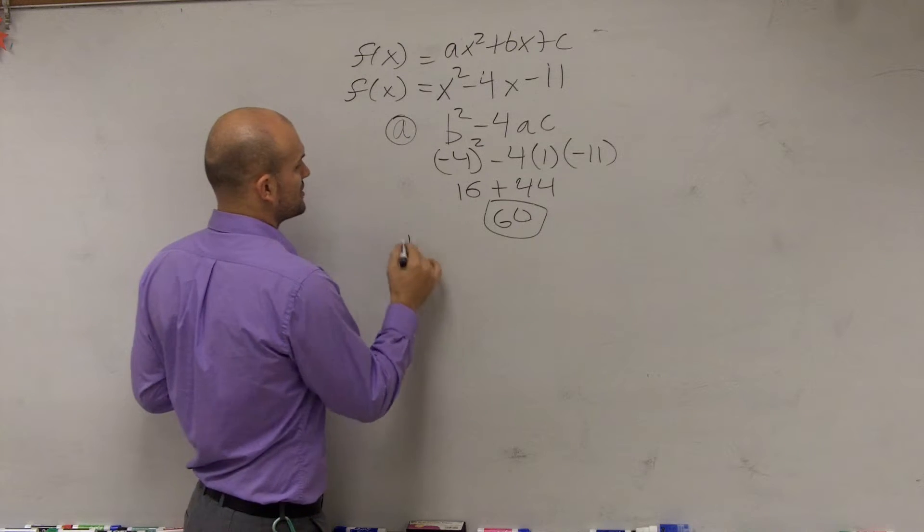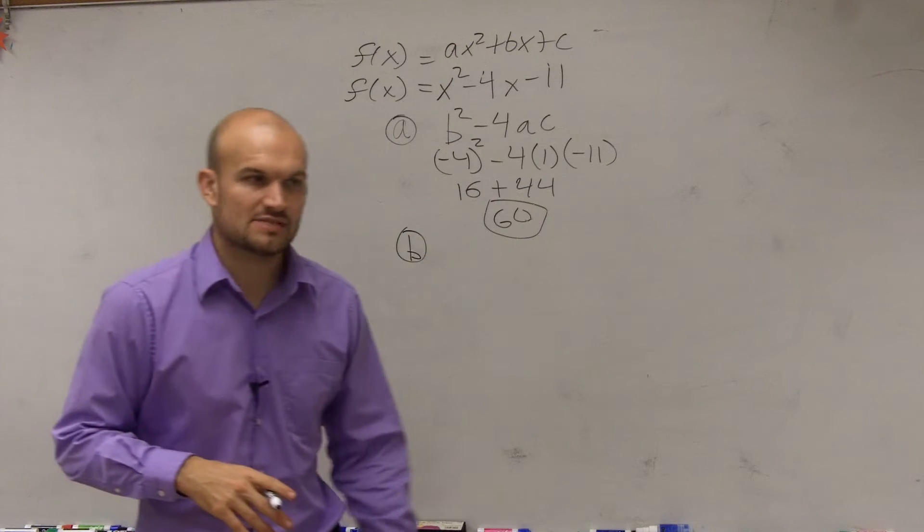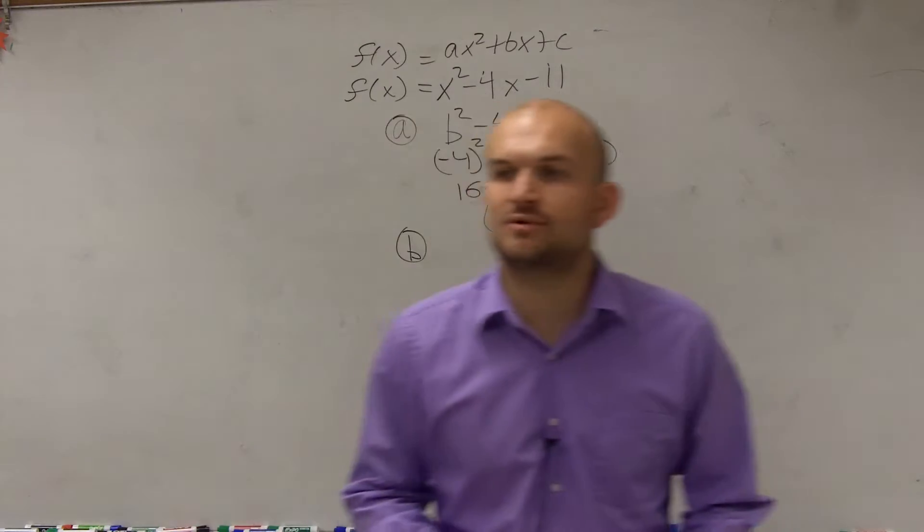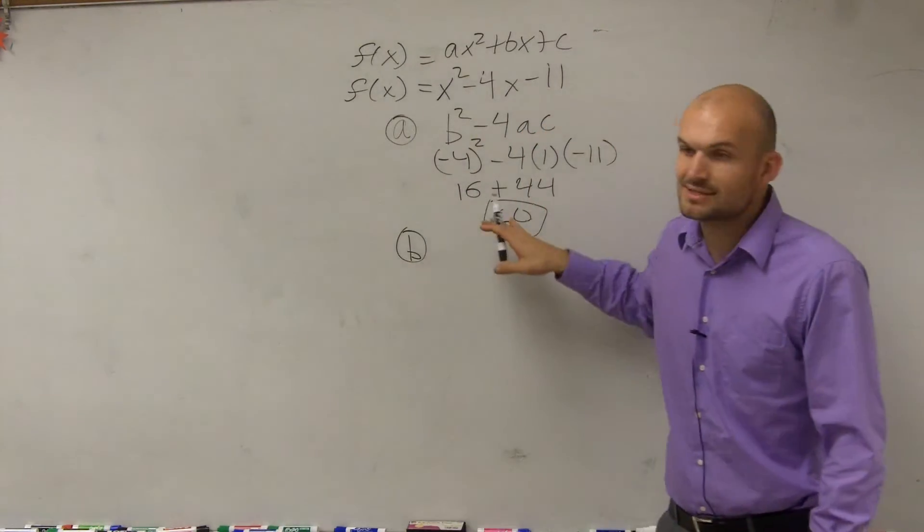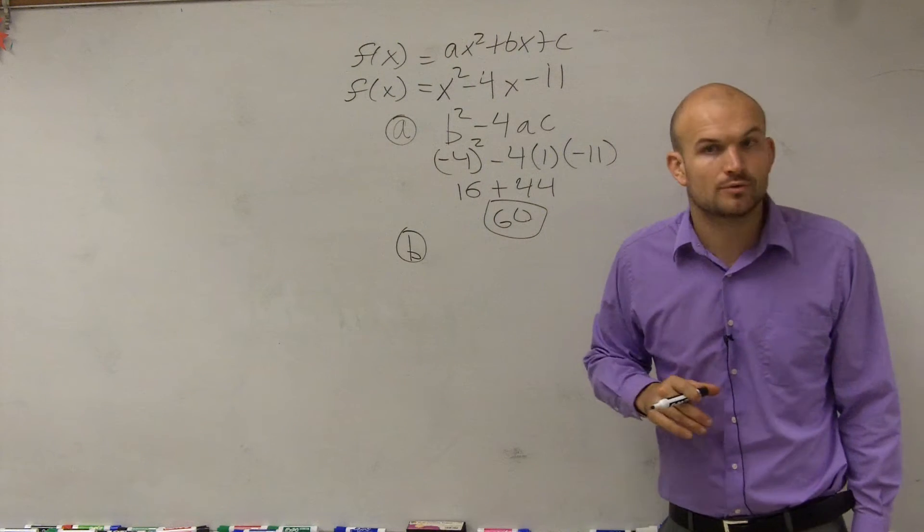The next thing I asked you to do was describe this. That's why we like to use the discriminant or find what the discriminant is first, because you need to describe what the discriminant is. Since this is positive, I know that I'm going to have two real roots.